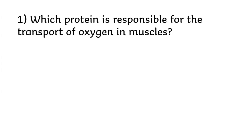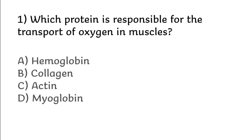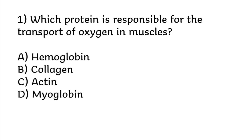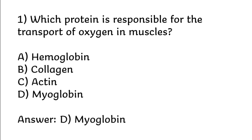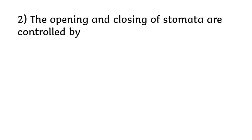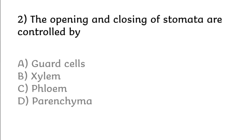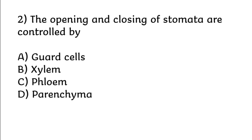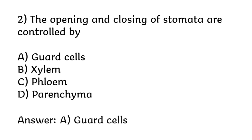Which protein is responsible for the transport of oxygen in muscles? Options: hemoglobin, collagen, actin, myoglobin. Correct answer is option D: myoglobin. The opening and closing of stomata are controlled by: guard cells, xylem, phloem, parenchyma. Correct answer is option A: guard cells.